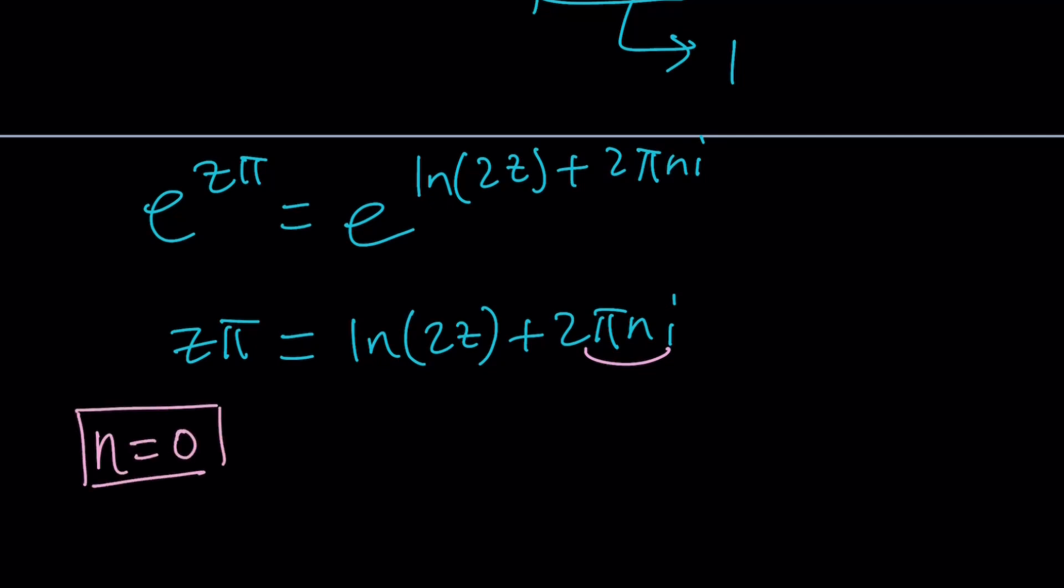And obviously that's an oversimplification, but let's just assume n is equal to 0. So it's basically going to give us the principal value. You're going to ignore the addition of multiples of 2πi, which is fine for particular values. And this is going to give us something much simpler. Of course, zπ is equal to ln(2z).